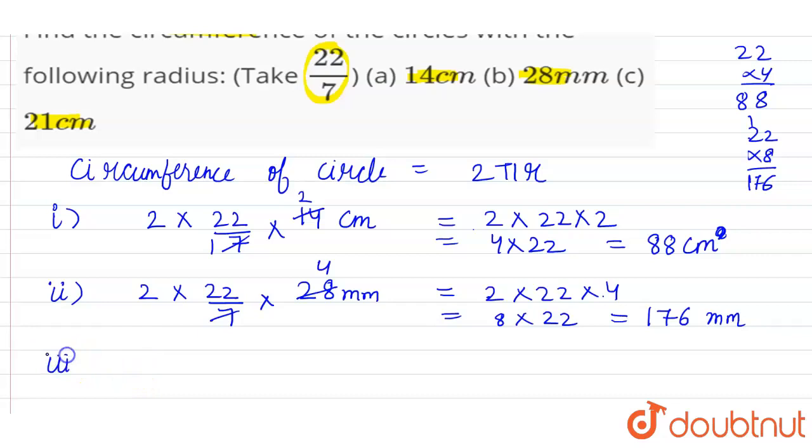Now in the third part, 2 × π = 2 × 22/7, and r is 21 cm.